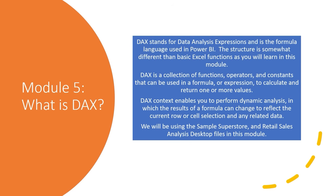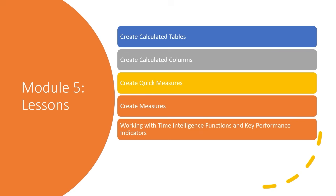You can find the files in the video description. We started building the Sample Superstore desktop file in Module 2. We'll be starting with the Sample Superstore desktop file if you want to get that open. This module has five lessons. We're going to start by creating calculated tables, then we'll create calculated columns. You'll learn about quick measures and measures and how to create them. Then we'll work with time intelligence functions and end up using key performance indicators.